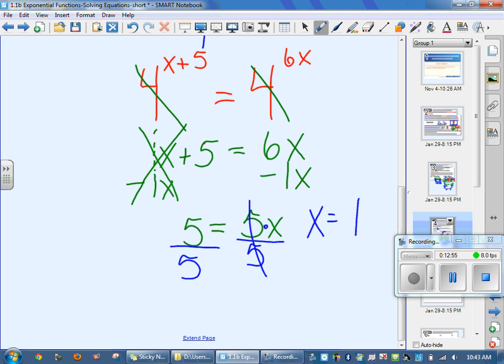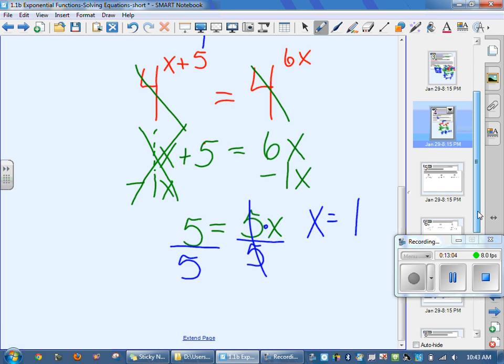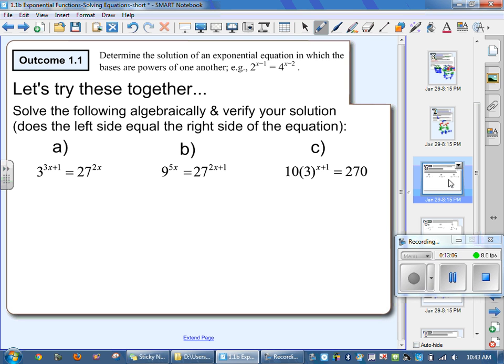Does that make sense? Let's try the next couple questions and see how we do. So the first thing we have to do when we see these questions is we have to write them with the same bases. If the bases aren't the same. So what can 27 be written as for a base 3?